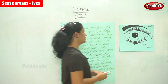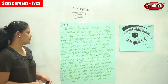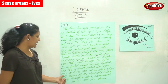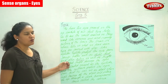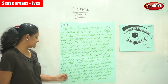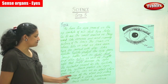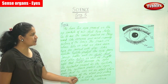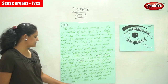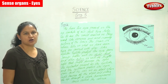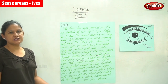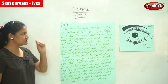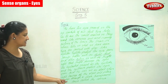The eyelashes present on the eyelids and the eyebrows protect the eyes from dust. We can see an object when light bounces off the object and enters the eye through a clear, transparent area called the cornea.